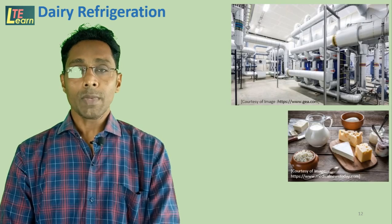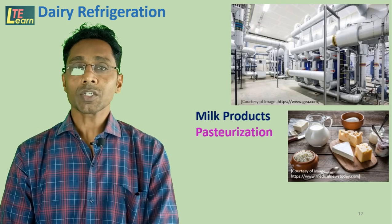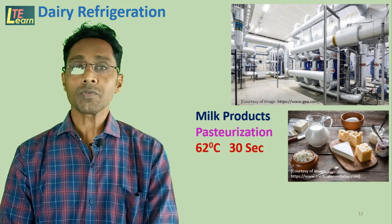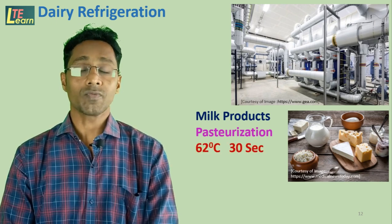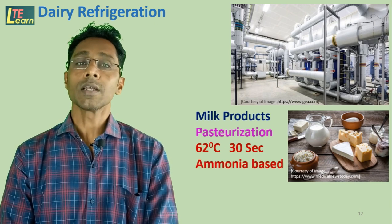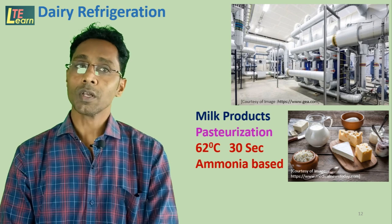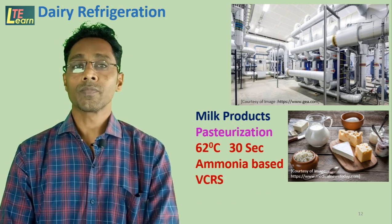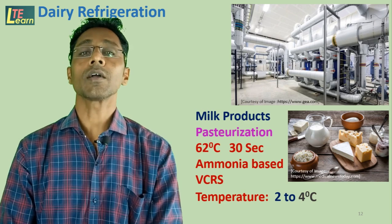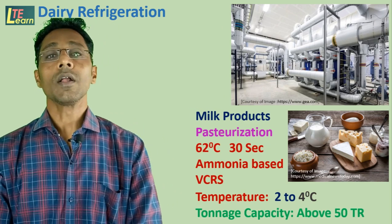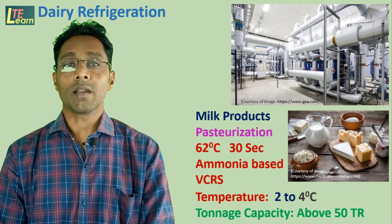Dairy refrigeration: In the case of milk products, pasteurization of milk is performed. Milk is heated to 62 degrees Celsius, held for 30 seconds, then cooled to 4 degrees Celsius and stored. An ammonia-based VCRS is used, with a temperature range of 2 to 4 degrees Celsius. Tonnage capacity for dairy refrigeration is about 50 TR.